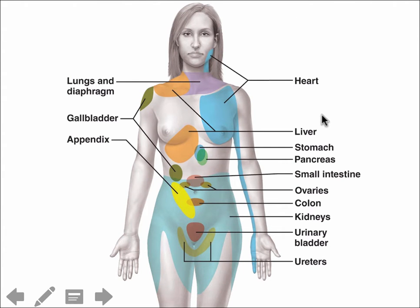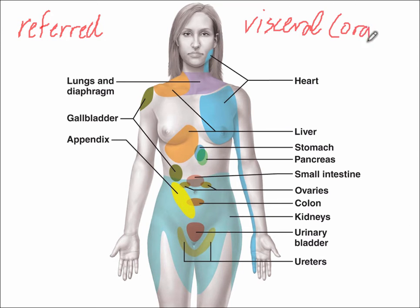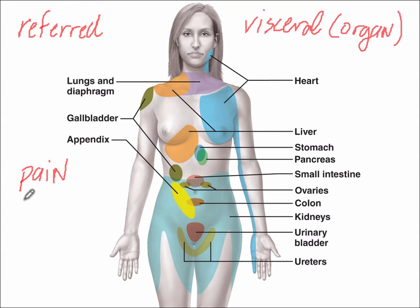Our first slide is on visceral and referred pain. The definition of referred pain is really just what it sounds like — it's pain that is visceral in origin. Remember that visceral is referring to an organ. There are pain pathways and somatic pain fibers that sort of travel alongside each other, so it's almost like the signals are mixed up together. This is very important for diagnostic purposes.